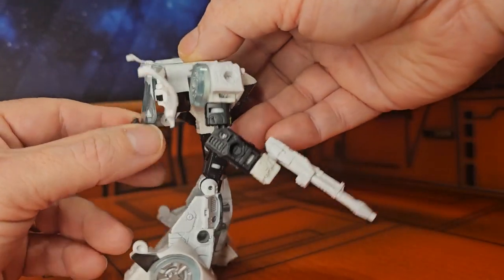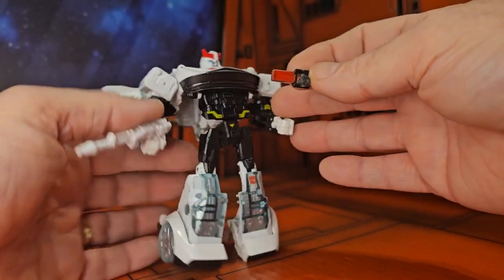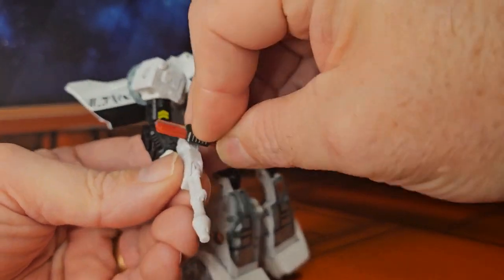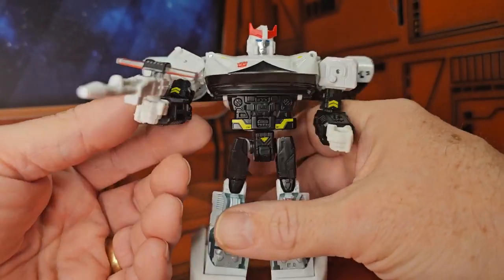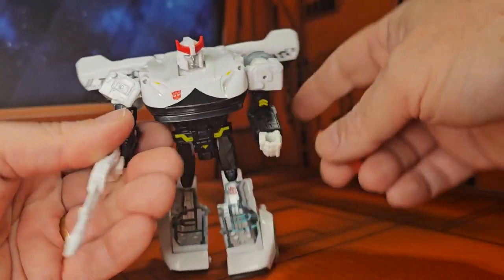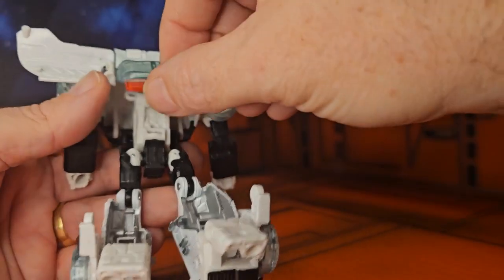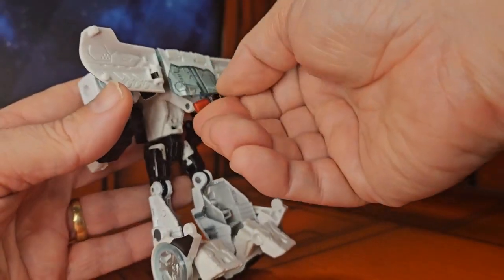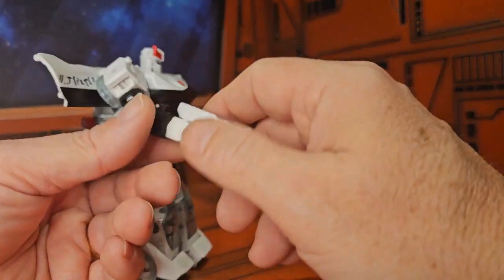He also has this part here on the back which can let him attach to the rear of his weapon, so you can have it like that. That is up to you. To me, I just want to go back to the G1 aesthetics and have that be part of his car mode.